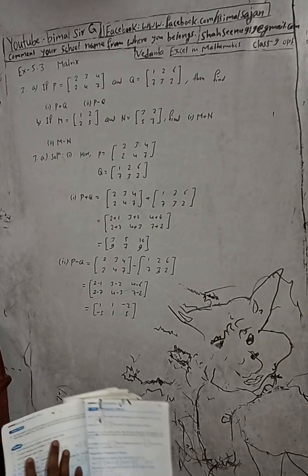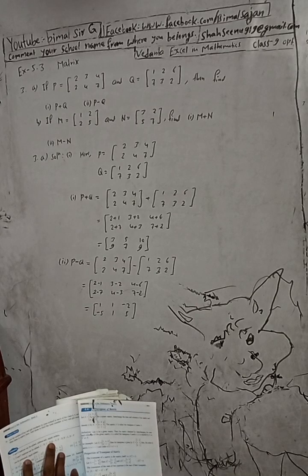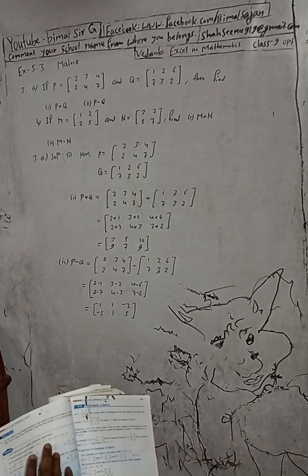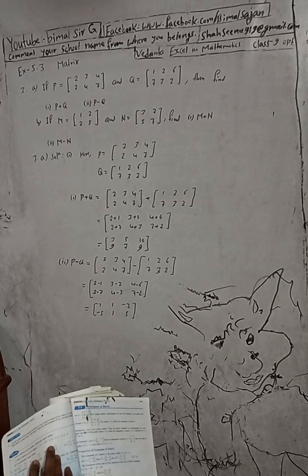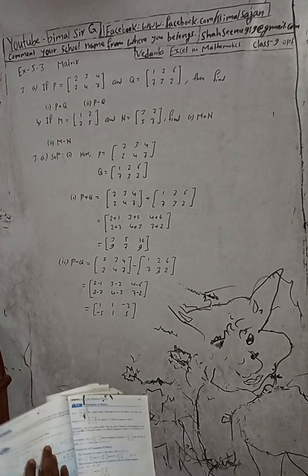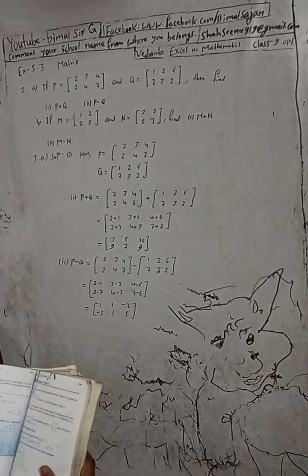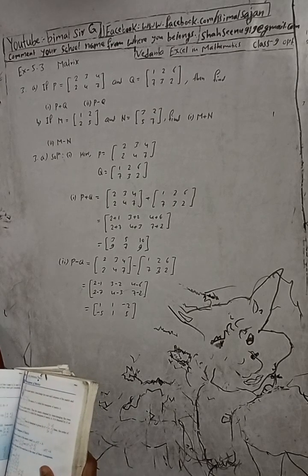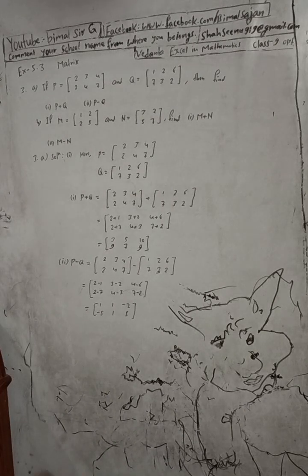To confirm: number 1 result is [3, 5, 10 / 9, 7, 9] — correct. Number 2 result is [1, 1, -2 / -5, 1, 5] — correct. This is the complete solution of A number, and the answer matches with the book.